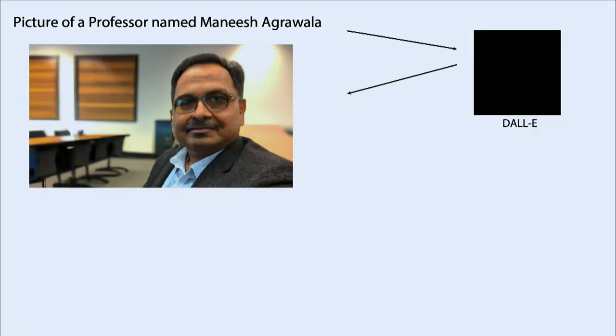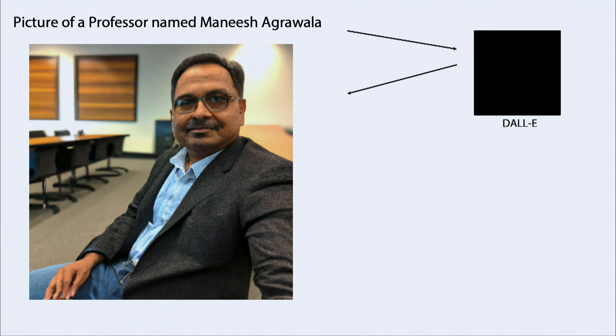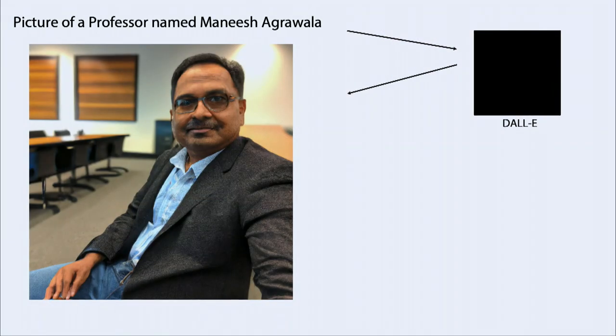A couple seconds later it produced this image — at many levels it's astounding. It made a photographic image where the background, person, and lighting all work well together. From the name alone it produced an image of someone of Indian origin, which is quite amazing. It does have some artifacts — the hand doesn't quite look human — and I was hoping for someone a little younger and cooler.